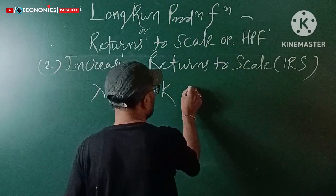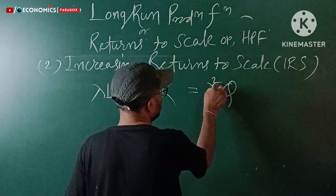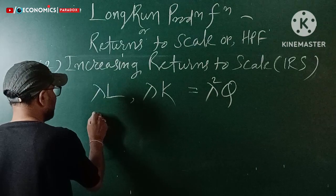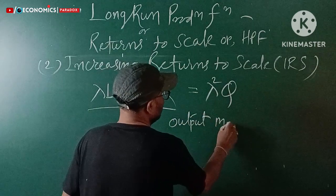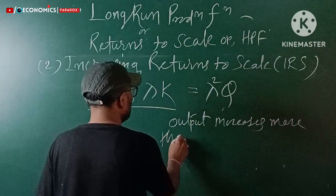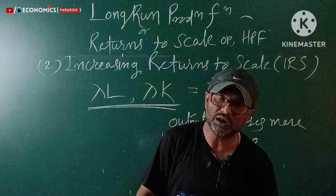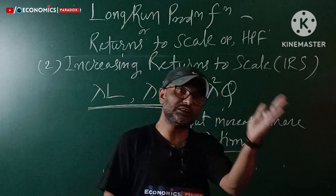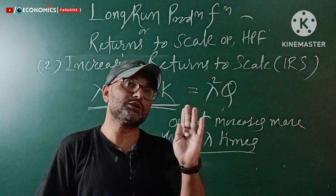When both factors change by lambda times, in the case of IRS the output increases more than lambda times. That is, if factors increase by lambda times, the output increases by more than lambda times — this is what makes it IRS.